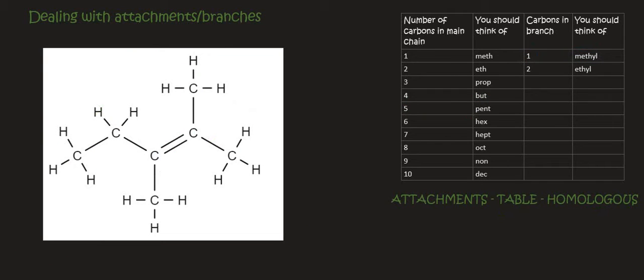Here's the next one. So we need to identify the longest continuous chain. So there we have five. So five is pent. Then we need to identify the homologous. Okay, so here we see that there is a double bond. So that means it's an alkene.